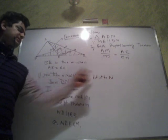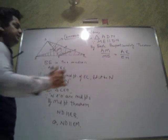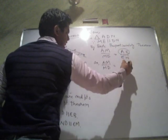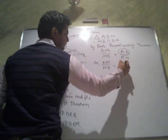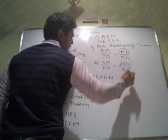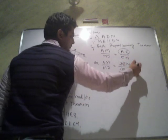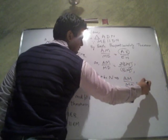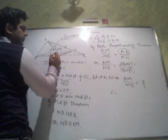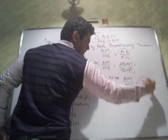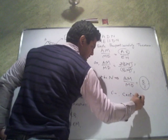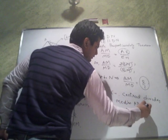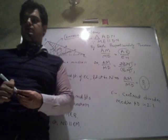Since N is the midpoint of EC and EC is equal to AE, you can write AM upon MD is equal to 2EN upon EN. The EN gets cancelled and you land with AM upon MD equal to 2 upon 1 — a constant ratio of 2:1. That is, the centroid divides the median AD in the ratio 2:1. Thank you very much.